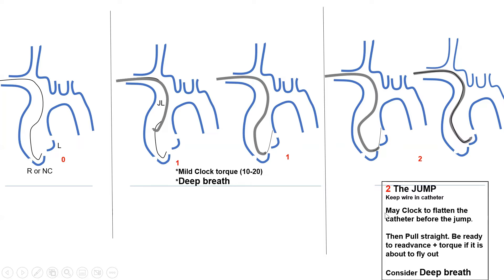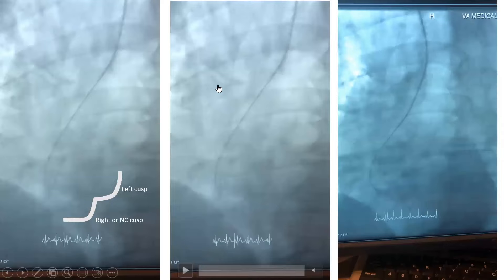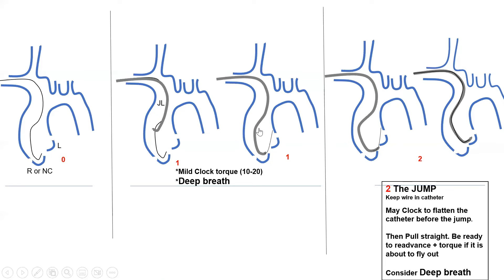Step two is the jump — the most critical and difficult step. Once your catheter is on the right cusp, you make a jump to the left. While maneuvering, keep the wire in the catheter for stiffness and as a bailout. Before you jump, make your catheter a little bit flat — flatten it. Often a clockwise torque flattens the catheter so that rather than looking at you directly in an LAO view, it appears flatter. Then you pull to make it jump to the left cusp.